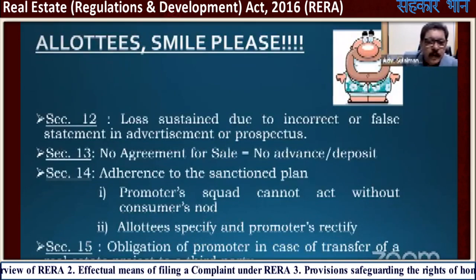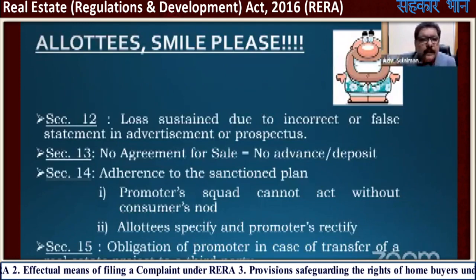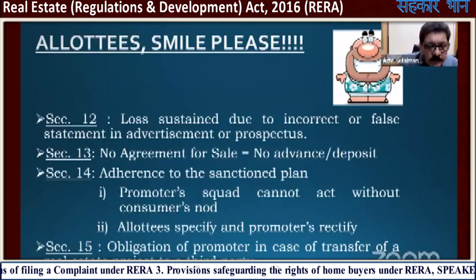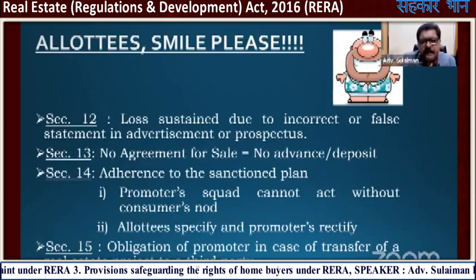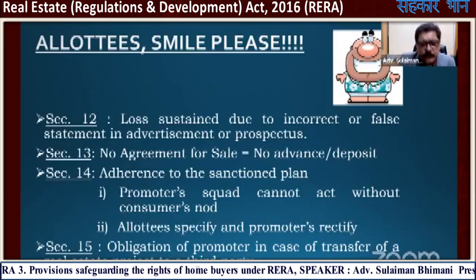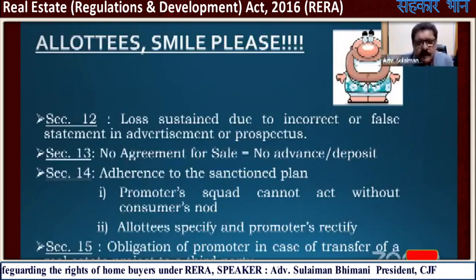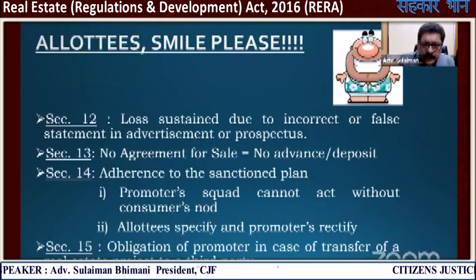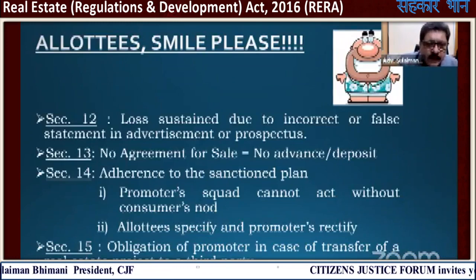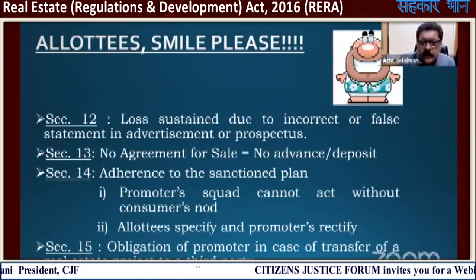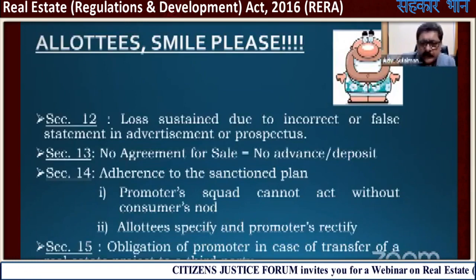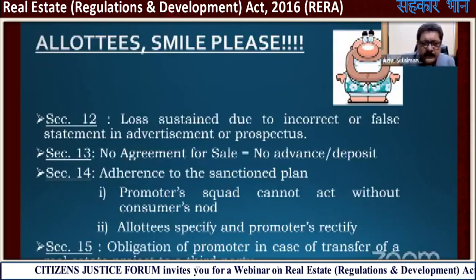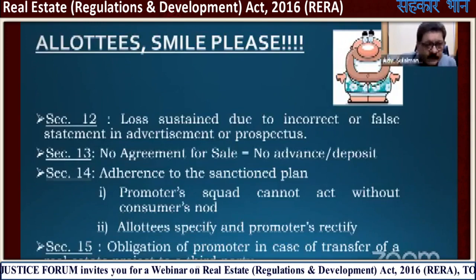The builder puts up very big large hoardings and gives you full-page ads with all kinds of dreams. But if you have that advertisement and what you actually get is not as per the advertisement, you can take action against the builder under Section 12, because you were promised something and you're getting something else — that is due to incorrect or false statement in advertisement, prospectus, or misrepresentation by the builder.